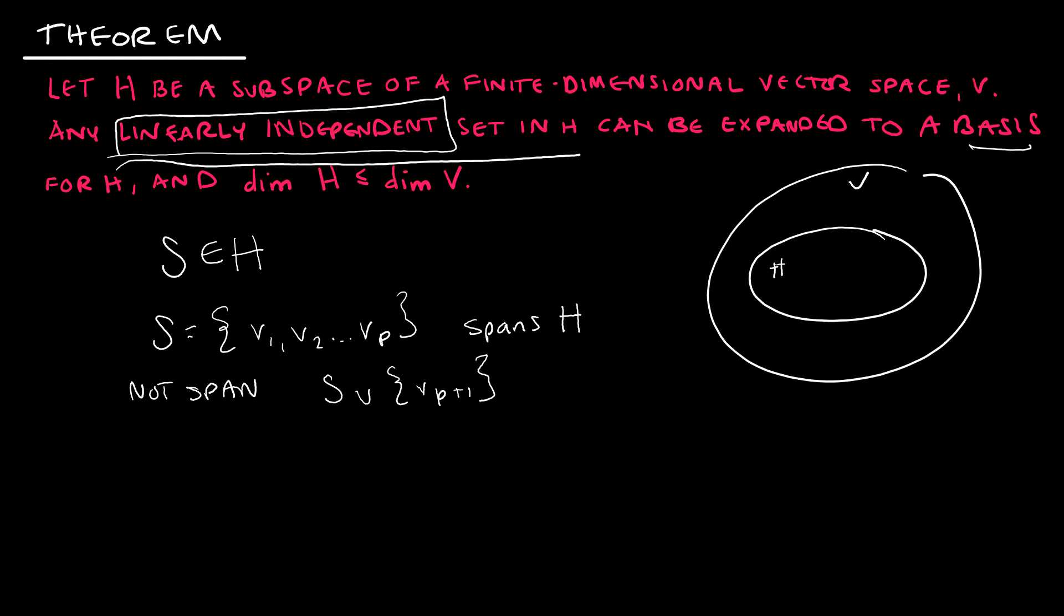that is in H. And that could be now, obviously set S is V1, V2 through VP, VP+1. And it could be now that it spans H. And if it does, then again we're done. And if it doesn't, then we just do this again. We add the next one and the next one.